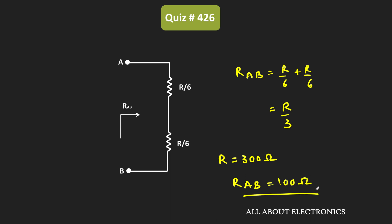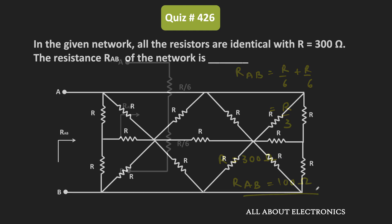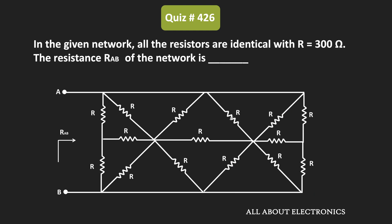So from this, we can say that the resistance of the network between terminals A and B is equal to 100 Ohm.